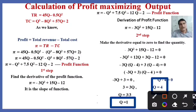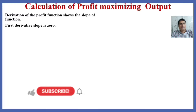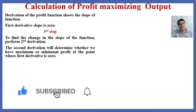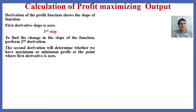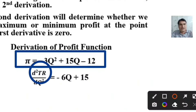Which quantity assures the maximum profit? The first derivative of the profit function shows the slope of the profit function. When the first derivative slope is zero, we need to find the change in slope. We perform the second derivation, which will determine whether we have a maximum or minimum profit at the point where the first derivative is zero. This is the first derivation we did, and now this is the second derivation of the profit function.